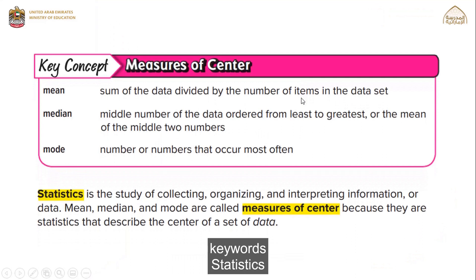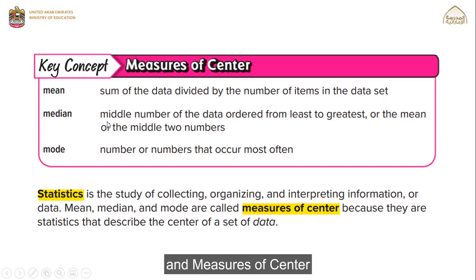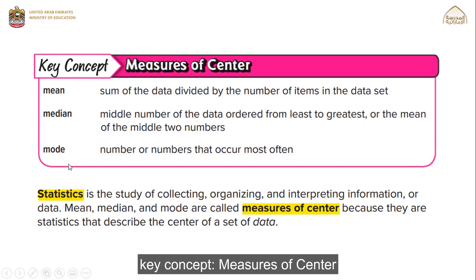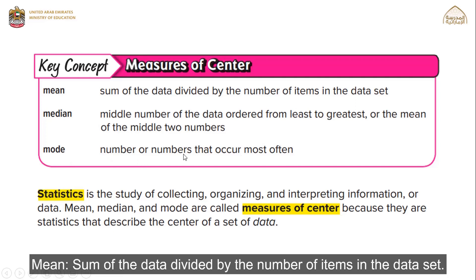Key concepts — measures of center: Mean is the sum of the data divided by the number of items in the data set. Median is the middle number of the data ordered from least to greatest, or the mean of the middle two numbers. Mode is the number or numbers that occur most often.